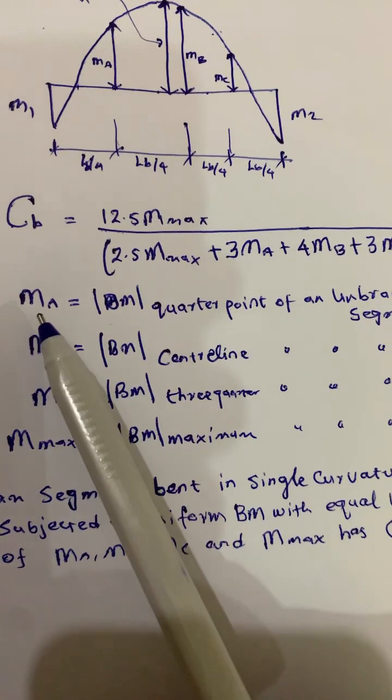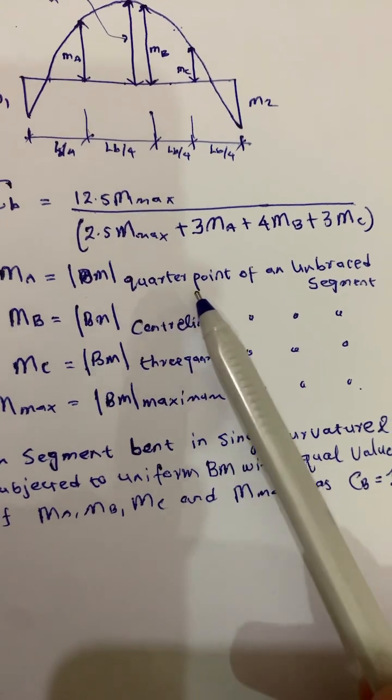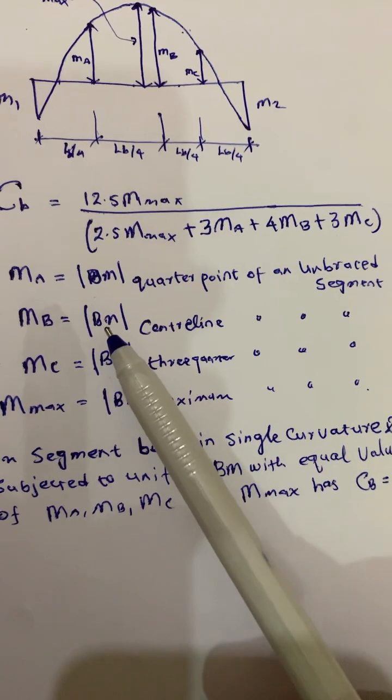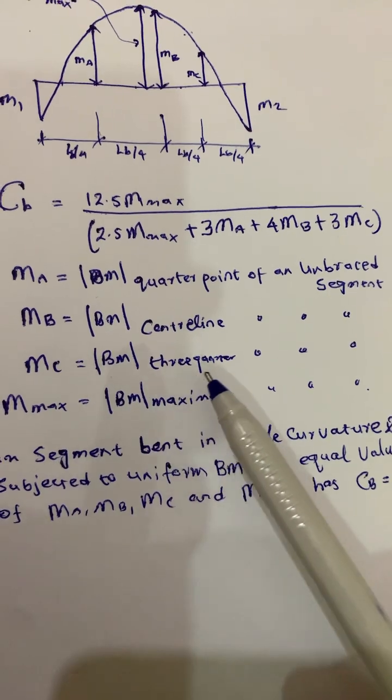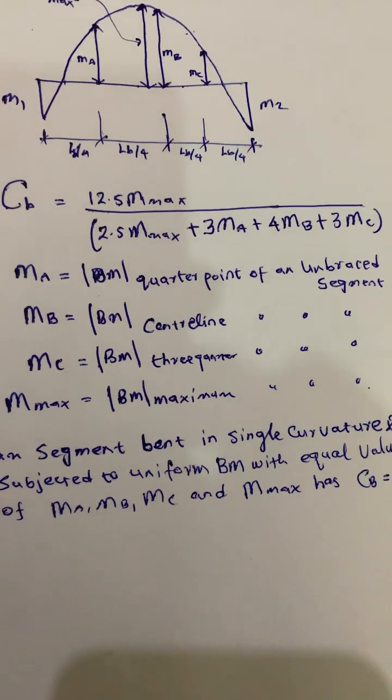As we have seen, MA means absolute bending moment value at the quarter point of unbraced segment. MB is the absolute bending moment at the center point of the unbraced segment. MC is the bending moment at 3 quarter point of the unbraced segment. Mmax is the maximum bending moment.